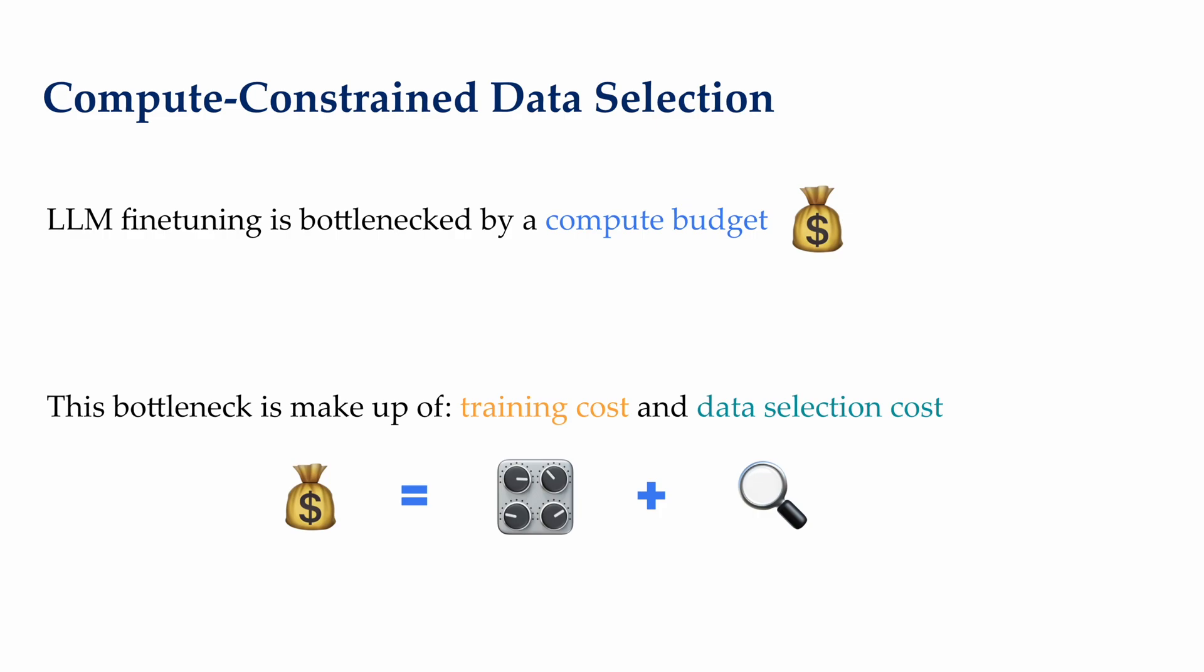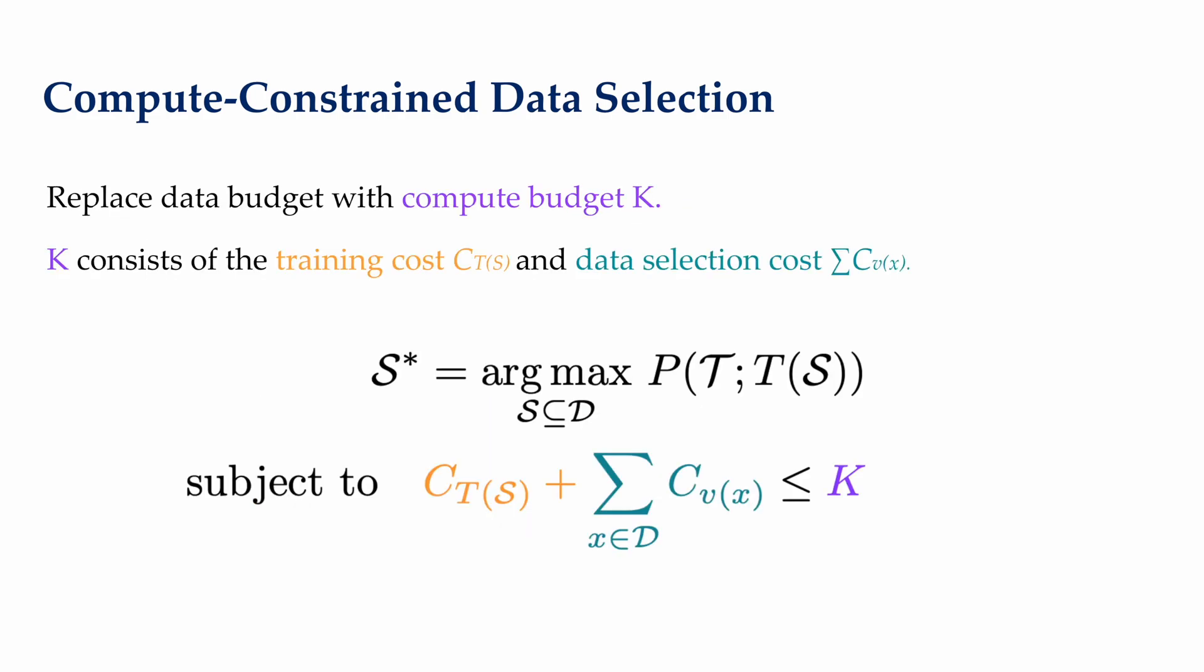While the formal framework presented in the previous slides provides a general definition for data selection, we argue that it is insufficient for the practical challenge of fine-tuning LLMs. The issue is that LLM fine-tuning is often bottlenecked by a computational budget than a data budget. There are two major computational bottlenecks in this process. First, the cost of training the model on any set of data. And second, the cost of computing the utility function on the entire training set. In practice, under compute constraints, the true cost of data selection can reduce significantly the amount of training points we can select for.